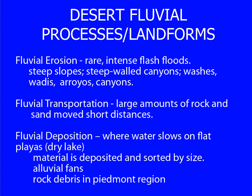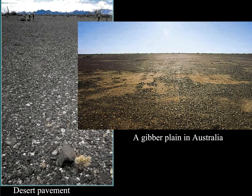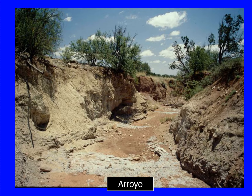Alluvial fans form and rock debris will be dropped in the Piedmont region. A playa is a dry desert basin that periodically fills up with water and has no outlet. It is a depositional area for large water flows. The Gibber Plains of Australia show hard, rounded stones across a very flat landscape.